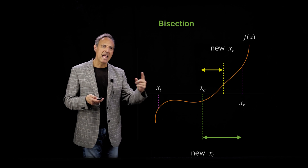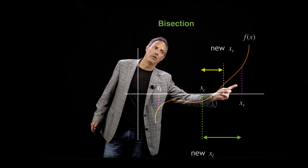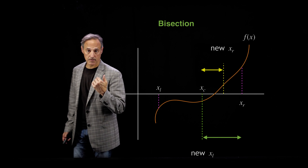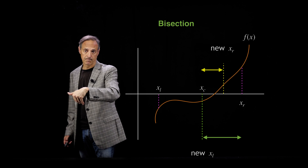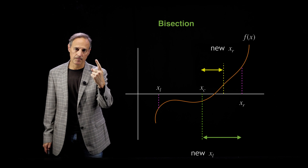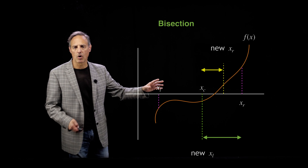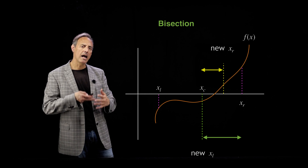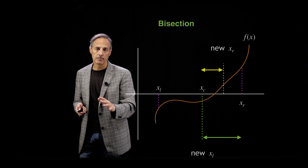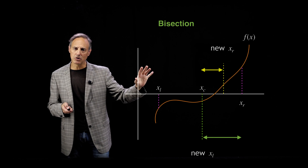Notice also that every time I cut it in half, I have to ask a question: is the zero point on the right side or the left side? That's an if statement. So there's clearly an if statement which says if it's on this side do something, if it's on this side do something. So we know we have at least one if statement and we know we have a for loop.